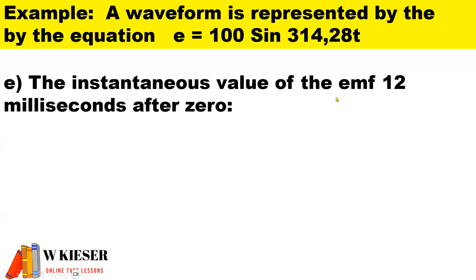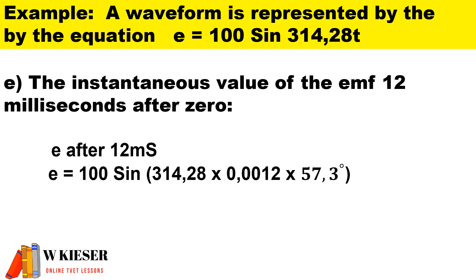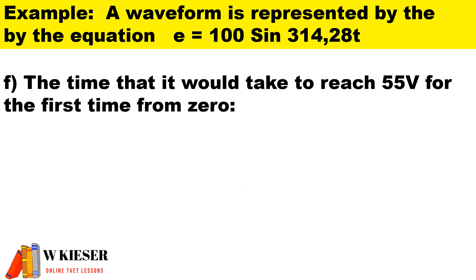To calculate the instantaneous value of the EMF 12 milliseconds after zero, don't forget to convert milliseconds to seconds. We substitute all our values into the equation. We have a maximum value of 100, our radians is 314.28, and to convert that to degrees we multiply by 57.3. To convert 12 milliseconds to seconds, we divide by 1000 and that will give us 0.0012. Therefore, we'll end up with an instantaneous value of -58.9 volts.